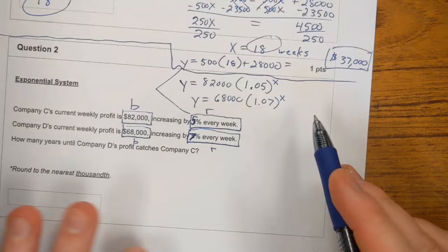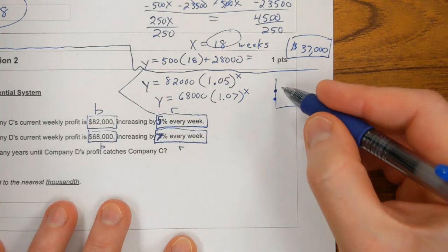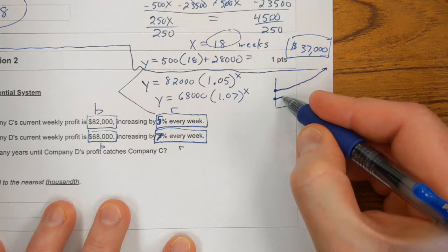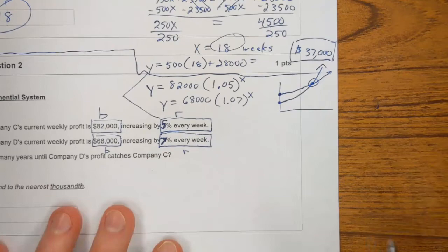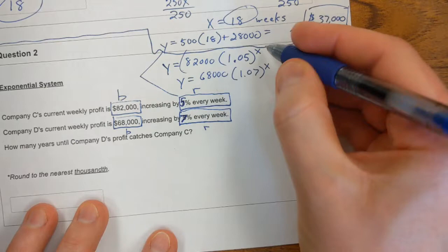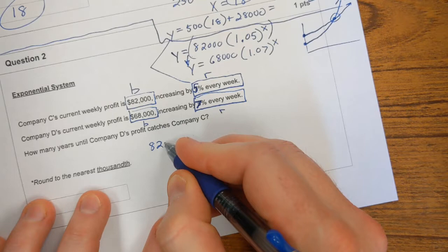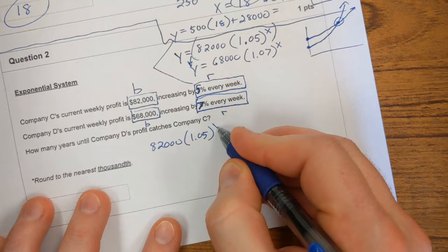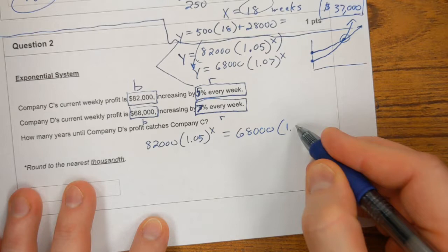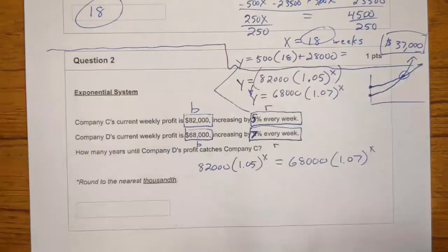Company C starts at $82,000. It grows by 5% every week. So it's going to look like this. And we've been practicing how to write these formulas, so hopefully that should be easy to you at this point. Company D starts at $68,000. It grows by 7%. Now, likewise, we could graph these on Desmos, right? You can have one company that starts up here, another company that starts down here. This company is going to have a slow curve because it's 5%. This company is going to have a faster curve because it's 7%. Right here would be the number of weeks it takes to catch up.